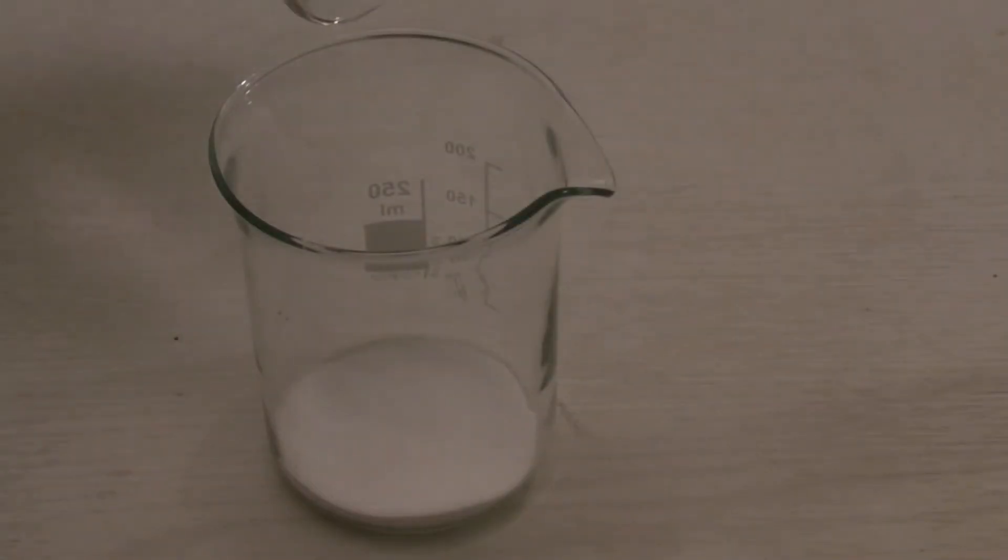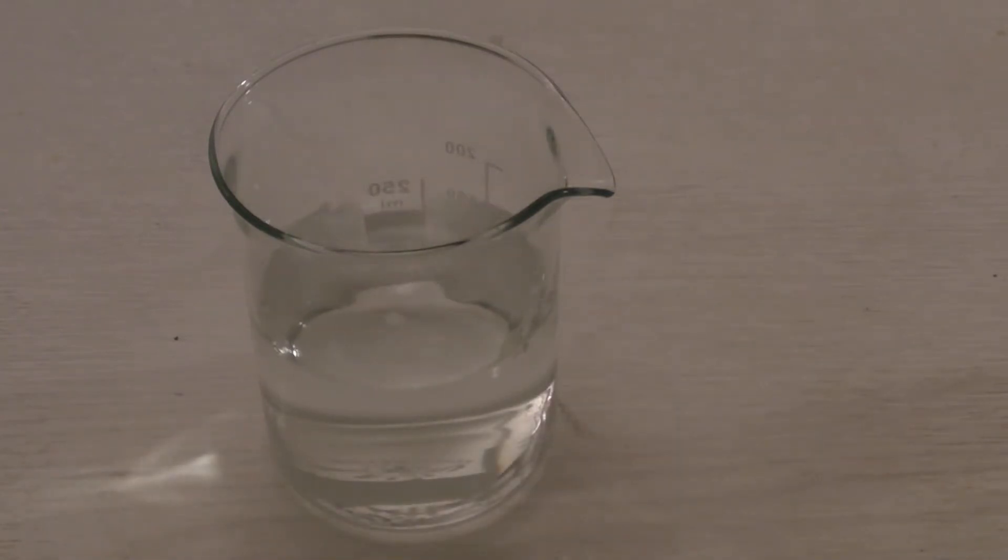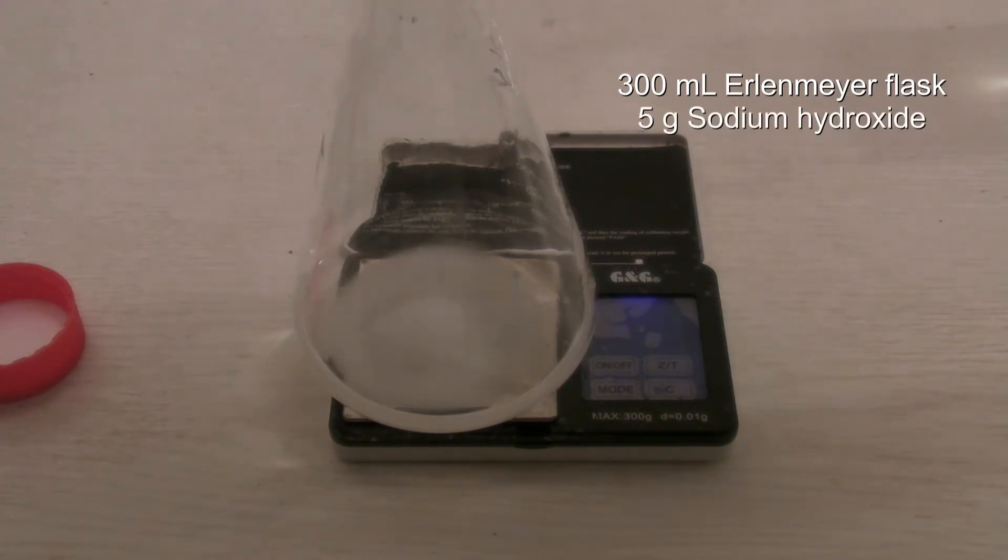In the 10 minutes when the sulfonation takes place, 7 grams of glucose were dissolved in 155 milliliters of distilled water. In addition to that, in a 300 milliliter Erlenmeyer flask, 5 grams of sodium hydroxide were dissolved in 50 milliliters of distilled water.